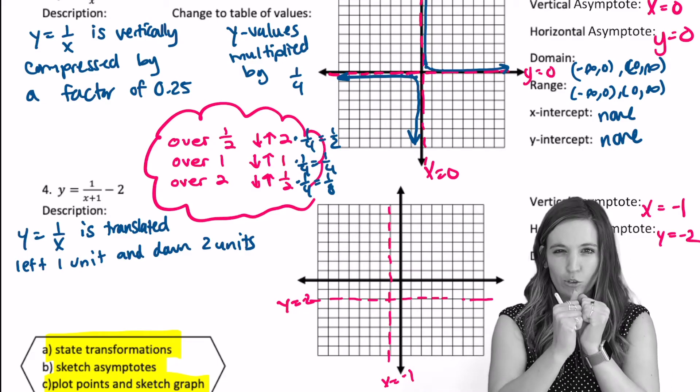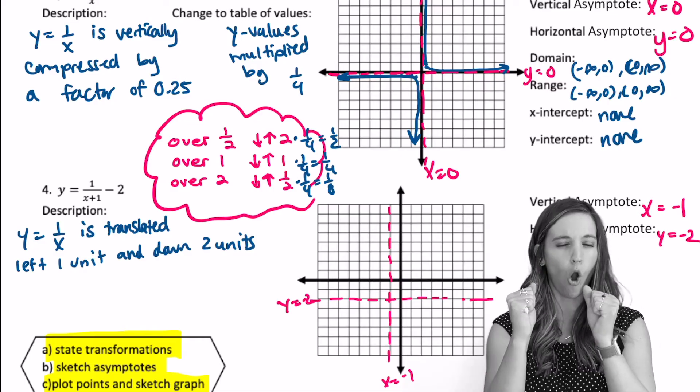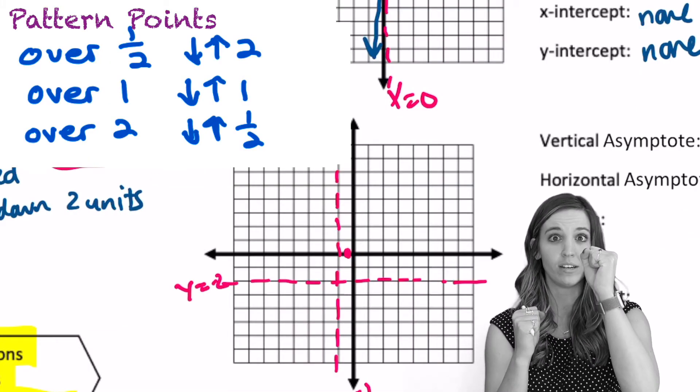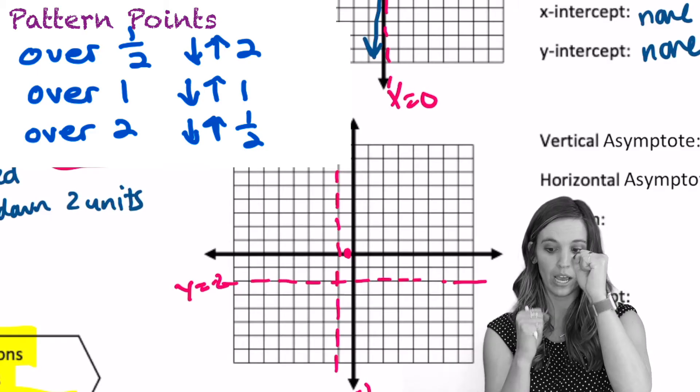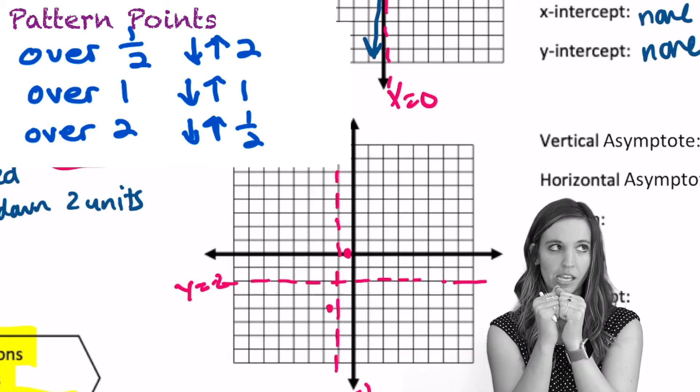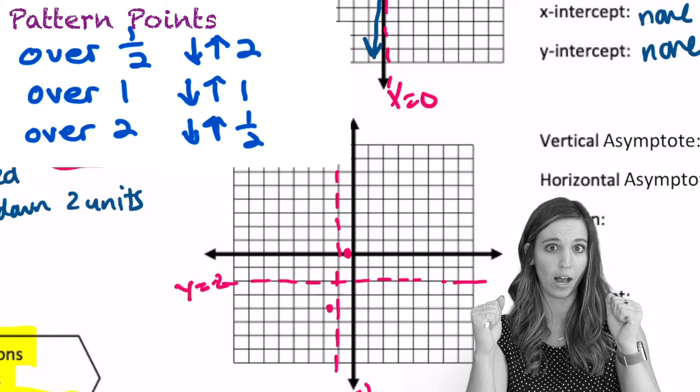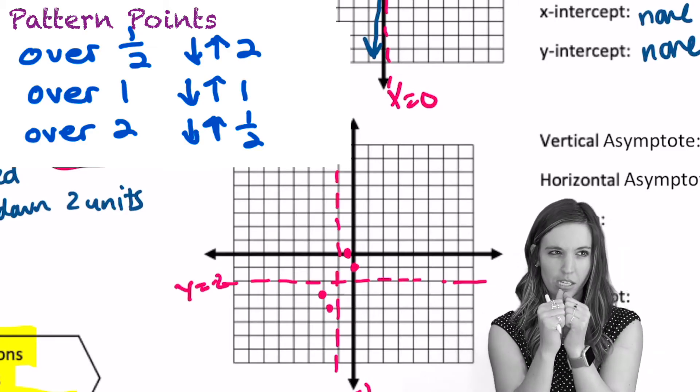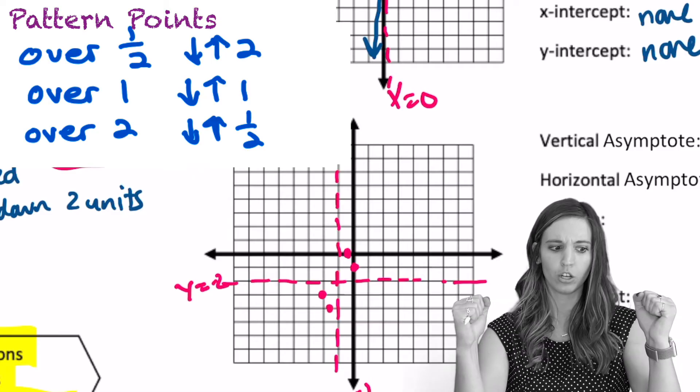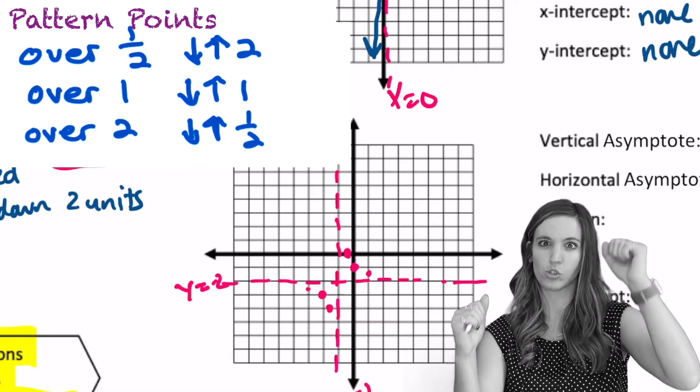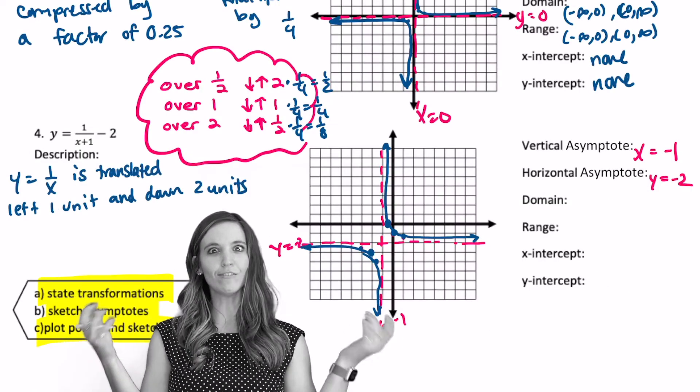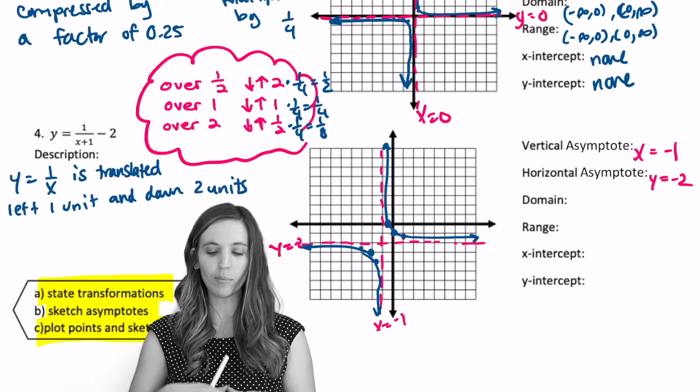Now I can build my graph from here. So starting from the center of those asymptotes, I can go over 1 half and then up 1 divided by 1 half. So 1 times 2. So up 2 and down 2. Back to the center. And then I'm going to go over 1. 1 divided by 1. Then up 1, down 1. And then back to the center. Over 2. And then 1 divided by 2. So up and down a half. We can do this. Well, there we have a translated reciprocal function. No problem.